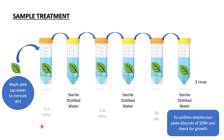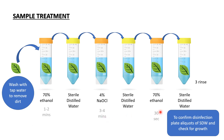After washing with tap water, treat the sample with 70% ethanol for one to two minutes, then rinse with sterile distilled water. Next, treat with sodium hypochlorite for three to four minutes, then rinse again with sterile distilled water. Then treat again with 70% ethanol for 30 seconds, followed by a wash with sterile distilled water. At the last step, give three rinses with sterile distilled water to minimize chemical carryover.